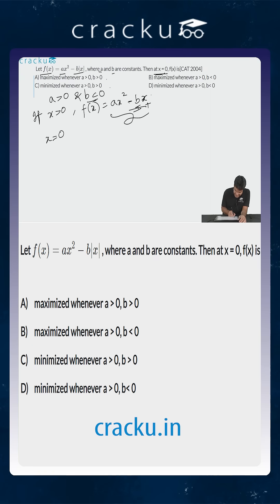If x equals 0, f(x) will equal 0 because ax² will be 0 and b modulus x will also be 0.